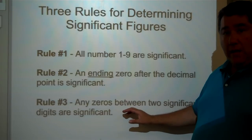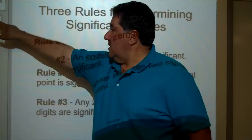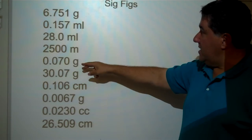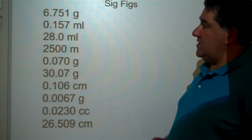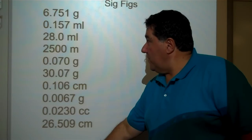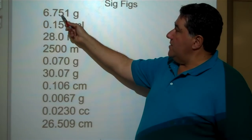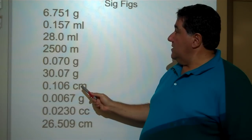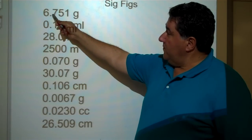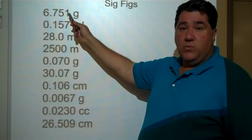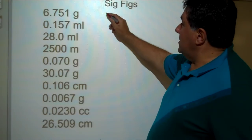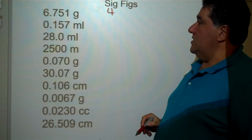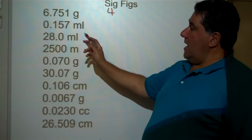Let's try a few problems to see how these three rules apply. I have a series of measurements here and we're going to determine how many significant figures are in each one. The first one: 6.751 grams. It's very important that the units are expressed. These are four numbers, all between one and nine, so by rule number one, there are four significant figures.